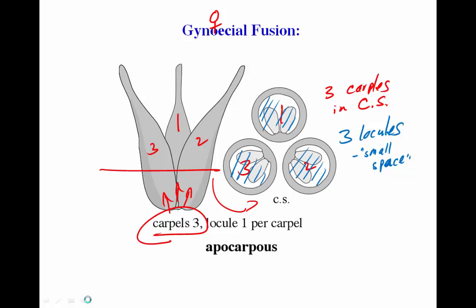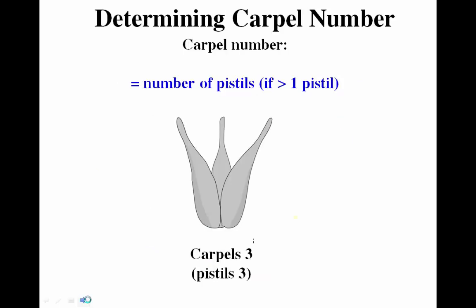This is a situation where we have an apocarpous gynoecium — the carpels are unfused, three separate carpels. You'll often see the number of pistils listed in keys. In this case, with three unfused carpels, we have three pistils.